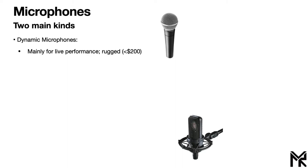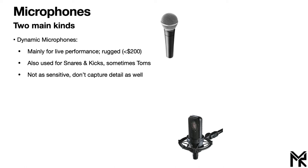Dynamic microphones are mainly used for live performance and they're super rugged. Most dynamic microphones can be found for under $200, including perhaps the most famous microphone of all — the Shure SM58, which I'm currently recording this video through. Some dynamic microphones are also used in the studio for things like snares, kicks, and toms — loud percussive instruments where you want the build quality of a dynamic mic. The drawback is they aren't as sensitive, so they don't capture detail well, particularly in the high frequency area.